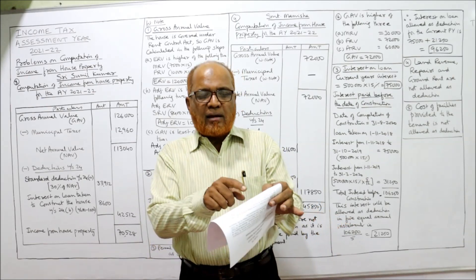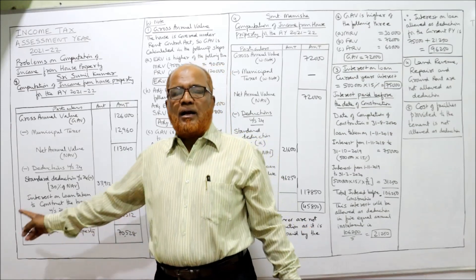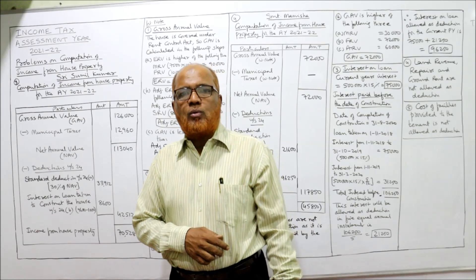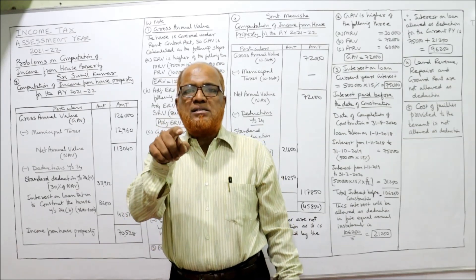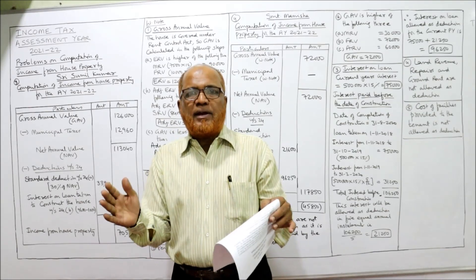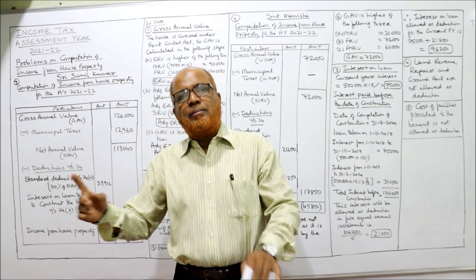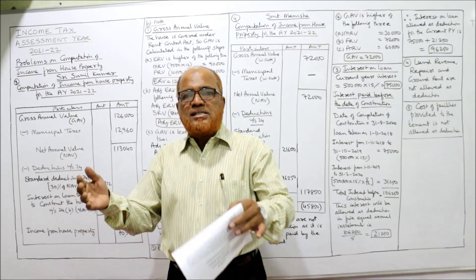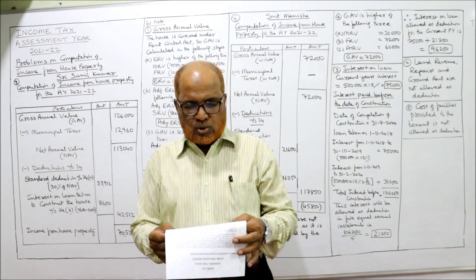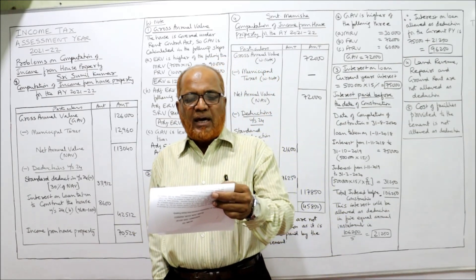The Income Tax Act says the rent received of ₹10,500 is considered while computing income from house property, whereas the service charges received of ₹2,000 are taxable under income from other sources. Both are separate — the rent received will be taxable under income from house property, and service charges received are taxable under income from other sources.